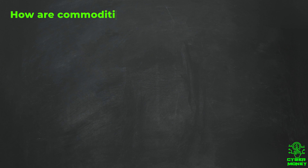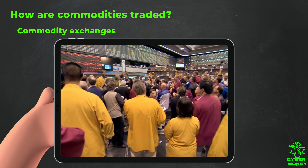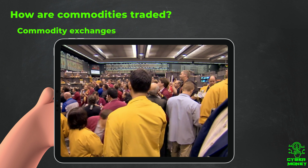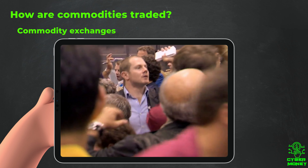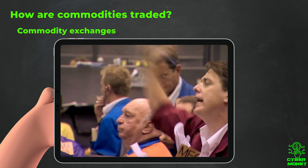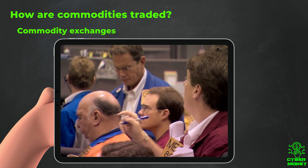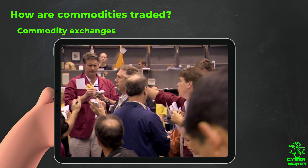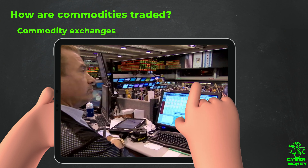Livestock and meat: this includes cattle, chicken, and other animals raised for meat production. Commodities are traded on special markets called commodity exchanges — these are like big marketplaces where buyers and sellers come together to trade different types of commodities.